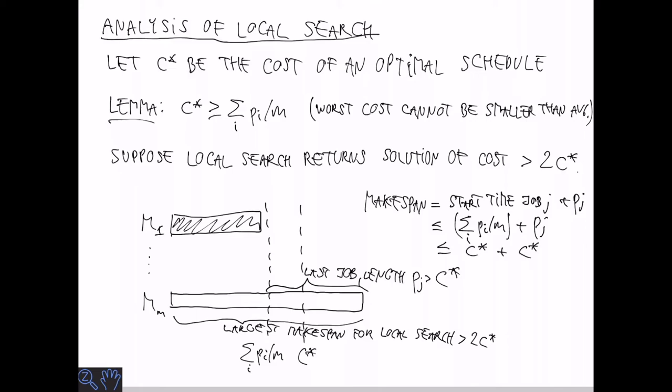is at most the average processing time by the local search property plus pj. And both of these are upper bounded by c star. So in total, it's at most 2 c star.